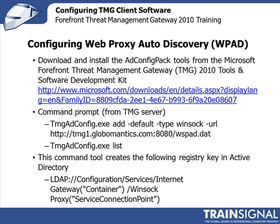Then you can use the list command with tmgadconfig.exe to see that it was actually added. What this does is create a registry key in Active Directory that you can see on your screen — it's a service connection point for Web Proxy information. So we're going to go over to the Threat Management Gateway system for GlobalMantics and download and install the ADConfigPack, then run these commands to make sure that we get the Web Proxy auto-configuration stuff in place.